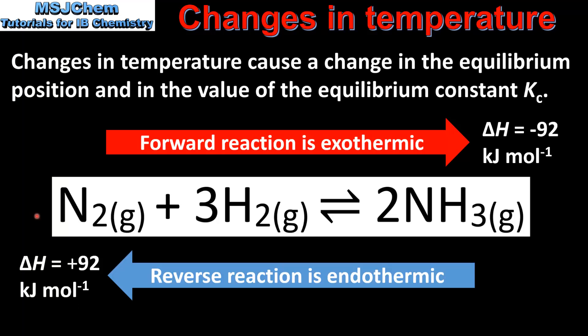When we use Le Chatelier's Principle to predict in which direction the equilibrium position will shift, we need to know if the forward reaction is endothermic or exothermic. If the forward reaction is exothermic, the reverse reaction is endothermic, and vice versa.